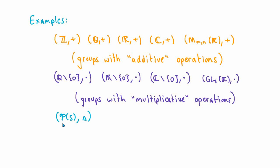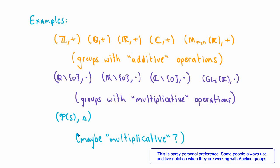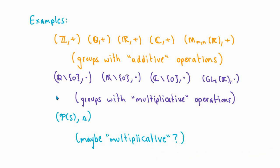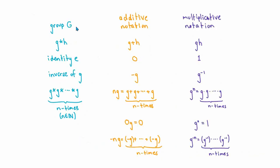For some groups it's not clear whether the binary operation is more like addition or multiplication, but in situations like that we usually lean towards the multiplicative notation for working with group elements. If we have a group G where the binary operation is most naturally thought of as additive, then we might write g star h as g plus h, but if the binary operation is more naturally multiplicative, then we might write g star h just as gh.